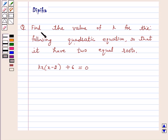Let's discuss the question. Find the value of k for the following quadratic equation so that it has two equal roots: kx into x minus 2 plus 6 is equal to 0.